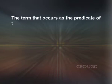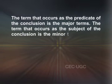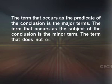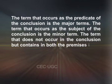The term that occurs as the predicate of the conclusion is the major term. The term that occurs as the subject of the conclusion is the minor term. The term that does not occur in the conclusion but is contained in both the premises is the middle term.